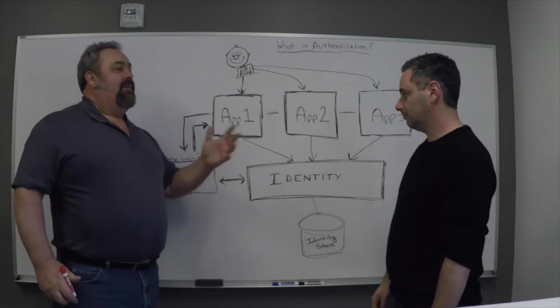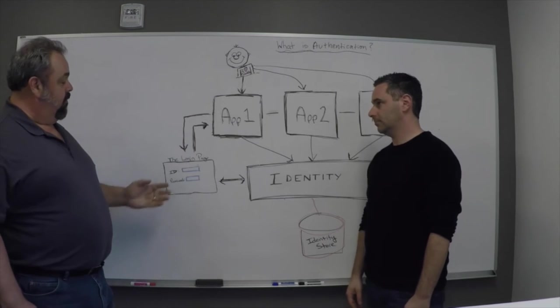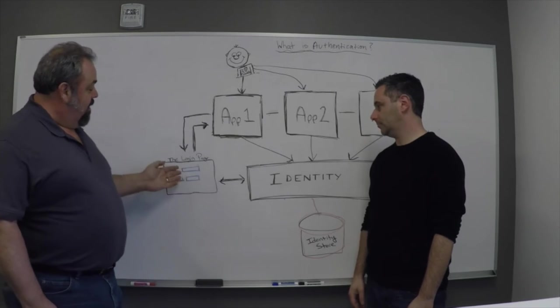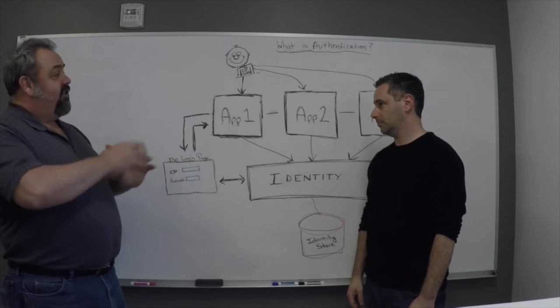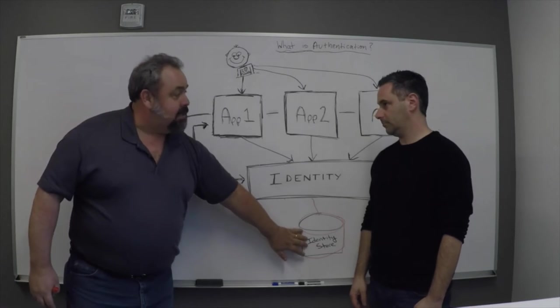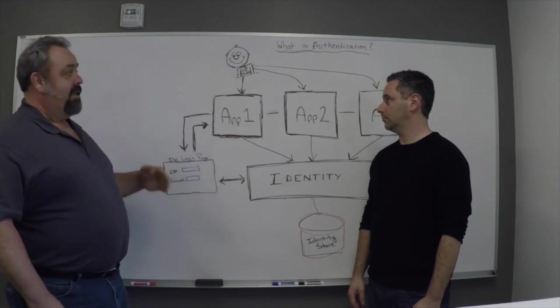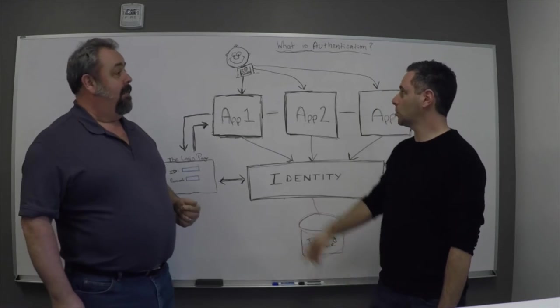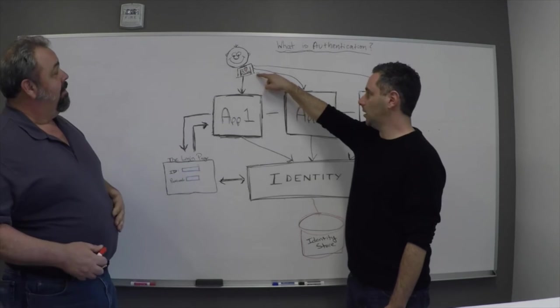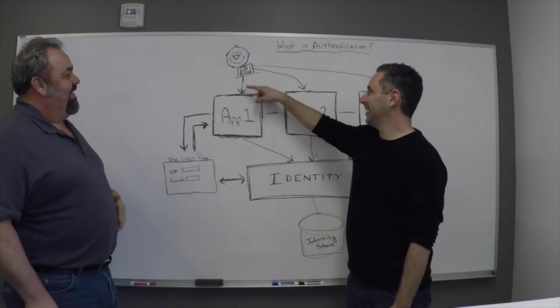The identity system takes this information and does some magic to make sure that it is indeed you, and can now tell each one of these applications that yes, Daniel has logged in. So if that's me and I'm Daniel, when I hit that app it's not resolving the authentication at the app, but rather bouncing it to the identity system.